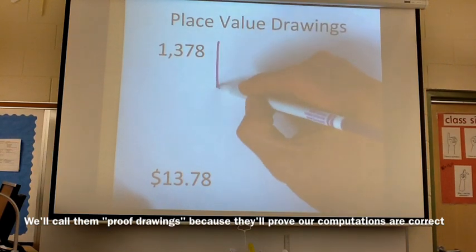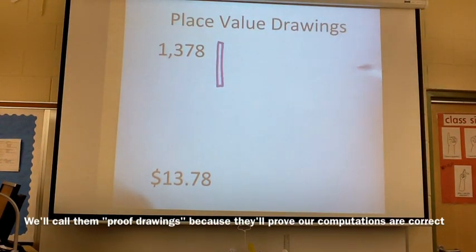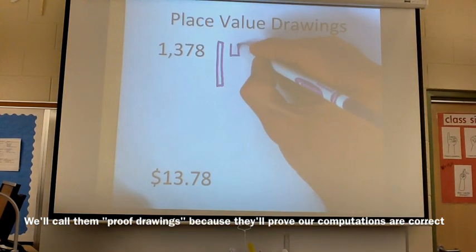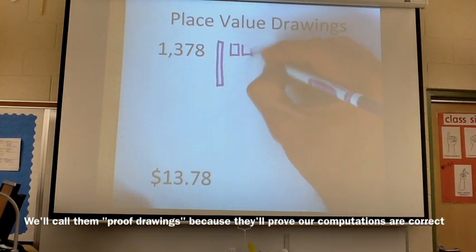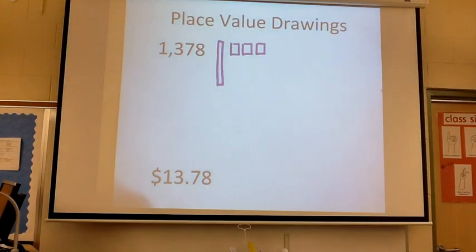So the thousands are bars. They're tall, thin rectangles actually made up of these hundreds boxes. So far we have 1,300, looks like that.